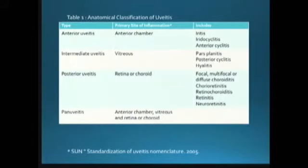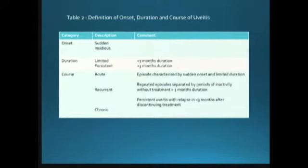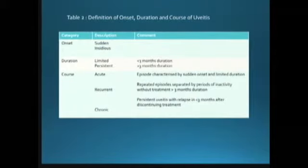This nomenclature is the standardization of uveitis done in 2005, and I will give you the reference at the end of the lecture. When talking about onset or duration of uveitis, you need to know if it is sudden or insidious. You need to know the duration: if it is limited, we are talking about less than three months; if it is persistent, it will be more than three months.